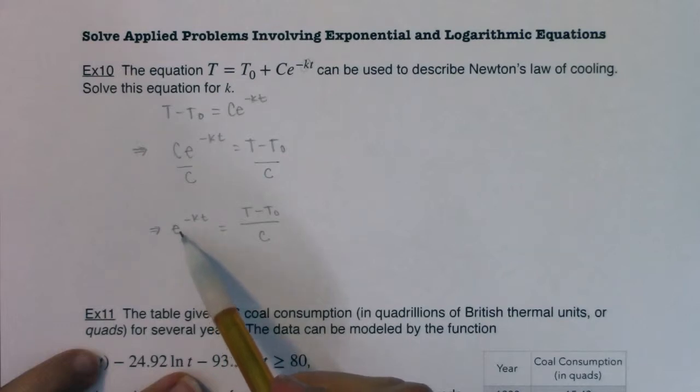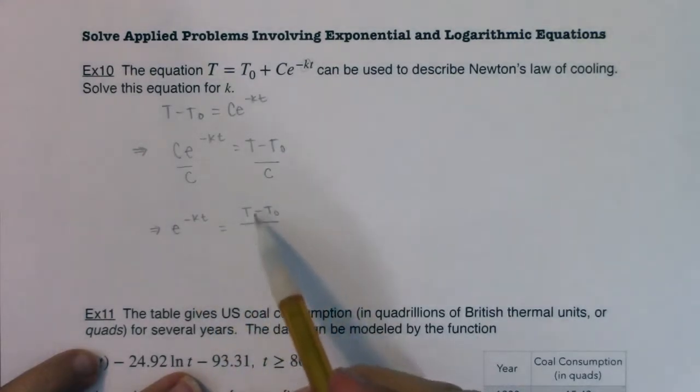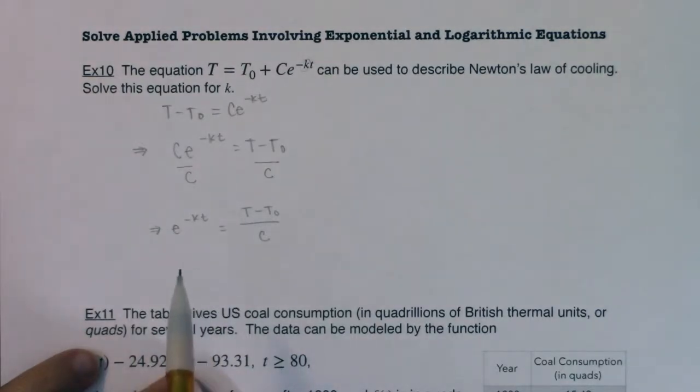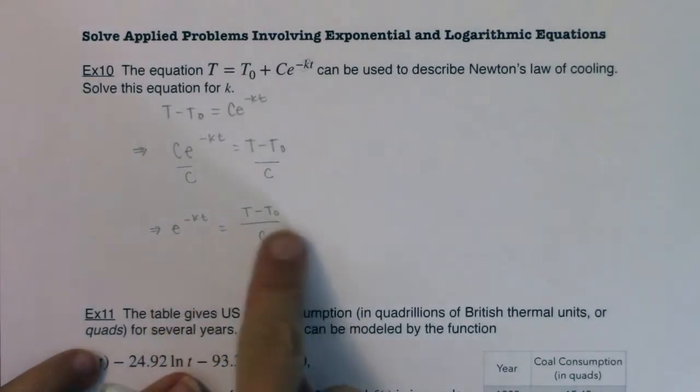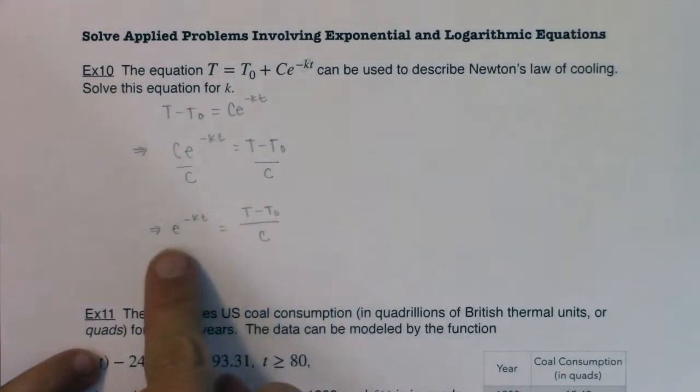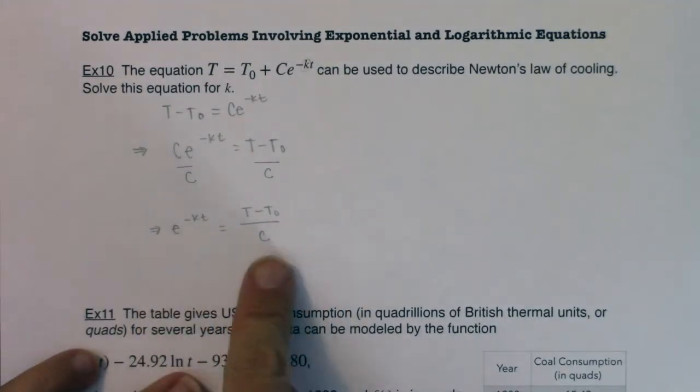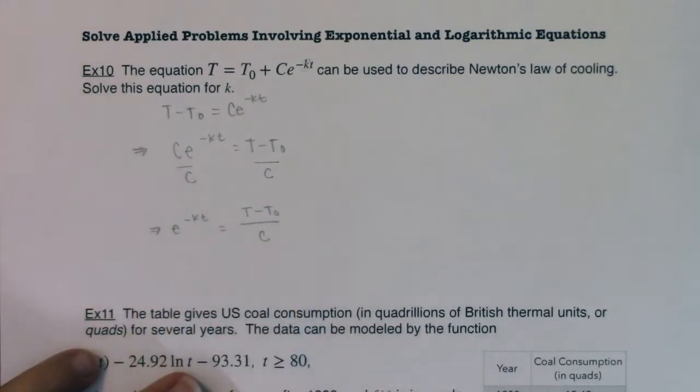When you have an exponential equation and you have a base e over here and a base on this side that is not e, what were our mechanics for this section? So I'll say it again. You have an exponential equation. The base on the left side is not equal to the base on the right side. So what do I need to do to both sides of that equation?